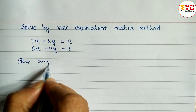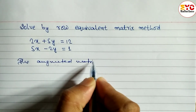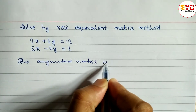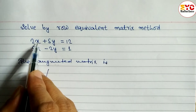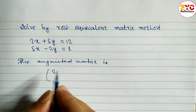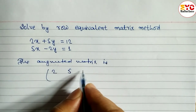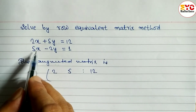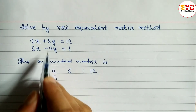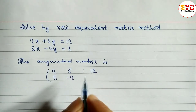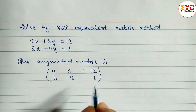The augmented matrix — we just have to write down the coefficient of x and y. The coefficient of x is 2, so we write 2. Coefficient of y is 5, so we write 5, and the constant number is 12. After this, the coefficient of x is 5, so we write 5. Coefficient of y is minus 2, so we write minus 2, and the constant number is 1.